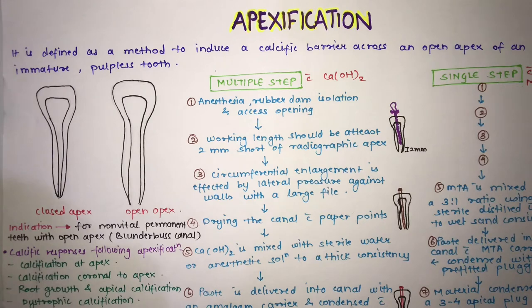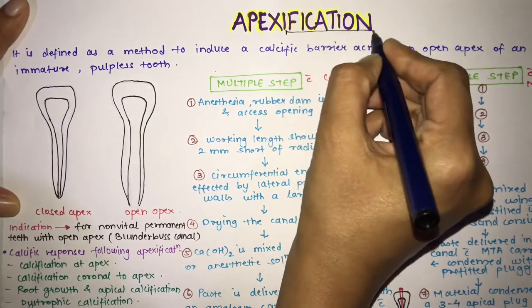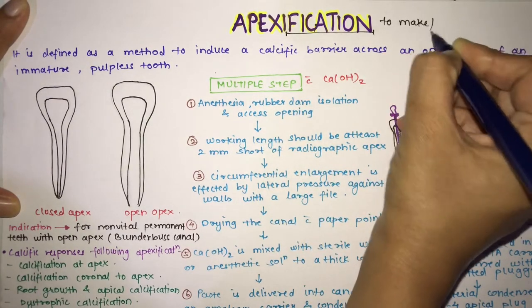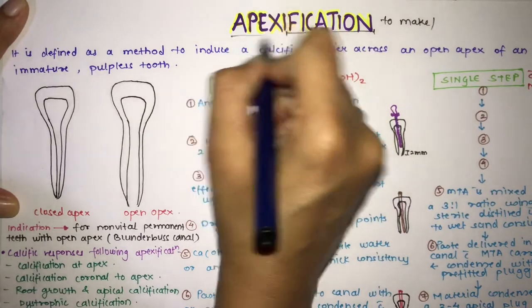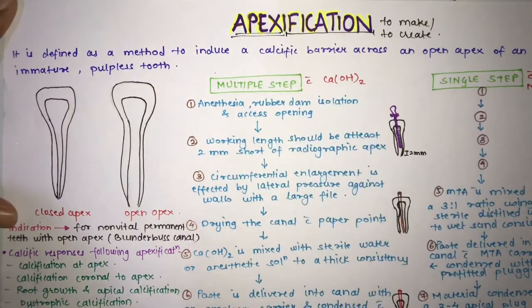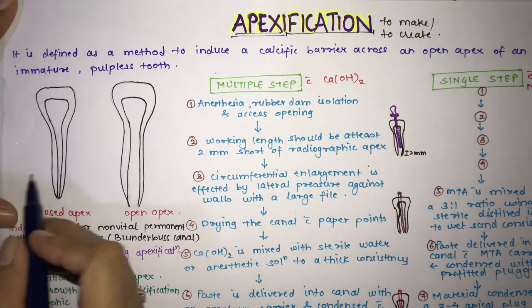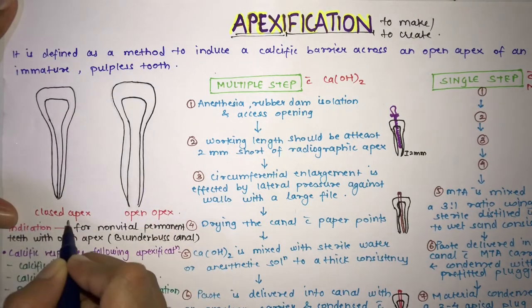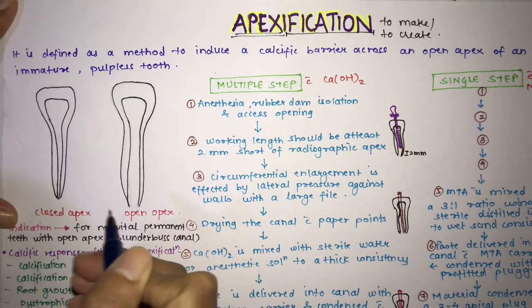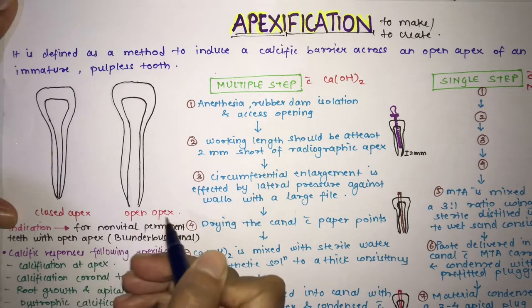Hello everyone, welcome back. The topic for today is apexification. Now, what do you mean by apexification? 'Fication' means to make or to create, so in this, what are you making? You're making the apex. Now, why do you need to make an apex? There are two scenarios: there is a closed apex and there is an open apex.